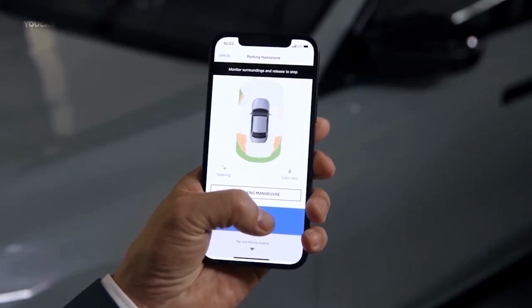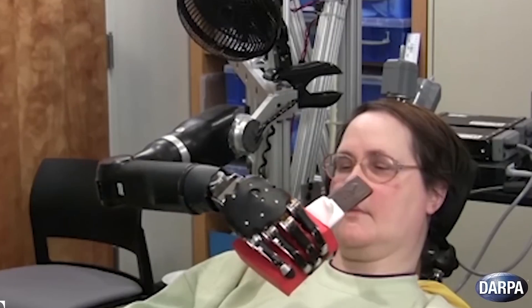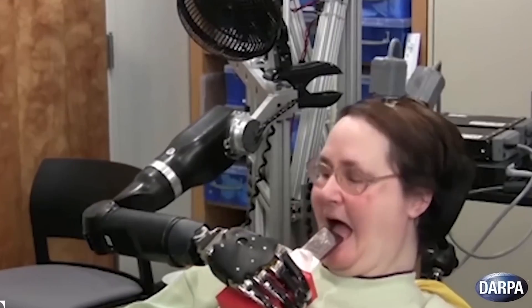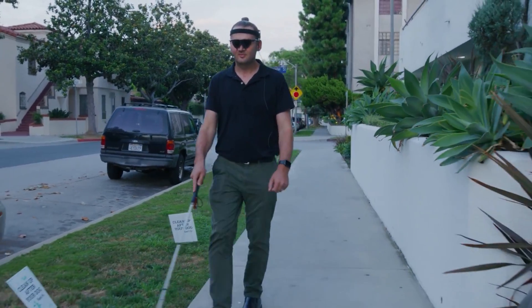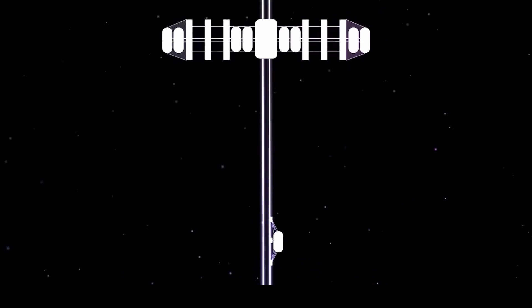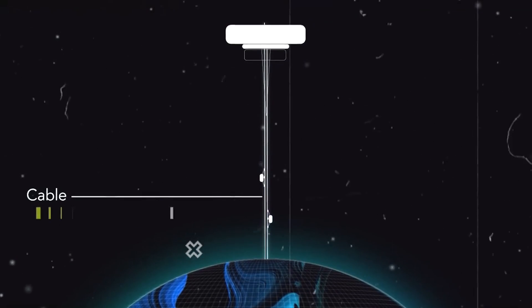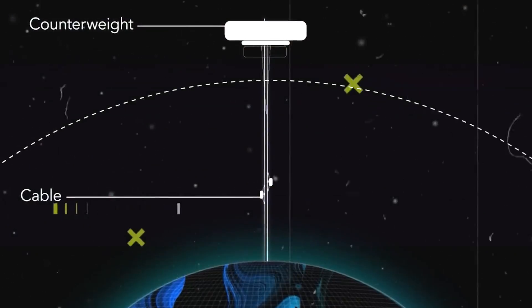Meanwhile, breakthroughs in technology are changing how we interact with the world around us. Brain-computer interfaces are allowing everyone to control things with their minds, while bionic eyes are giving people back their sight with incredible clarity. And with space elevators now a reality, the possibilities for exploration are endless. Imagine a world where we can travel to space as easily as taking an elevator ride.